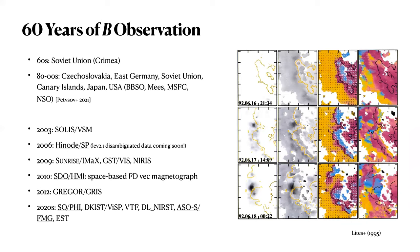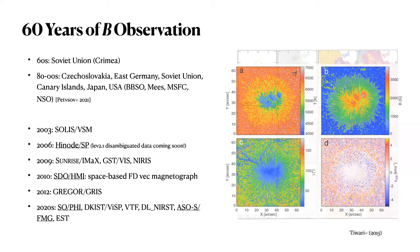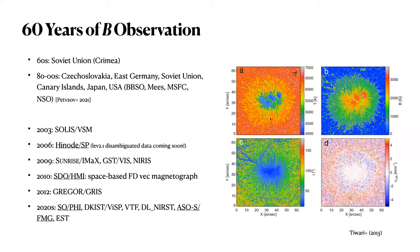In the 2000s, we had many new instruments, including SOHO and the first space-based magnetograph, Hinode. Compared with 50 years ago in the 1960s, the resolution really improved by a factor of 10 or more. Since then, we've had the balloon-borne instruments Sunrise and IMAX. Then in 2010, SDO/HMI became the first space-based full-disk vector magnetograph. In the 2010s and 2020s, with upcoming Solar Orbiter's PHI instrument and several instruments on DKIST, we're going to get observations very complementary to what we have now.